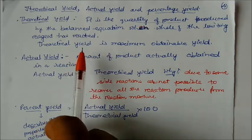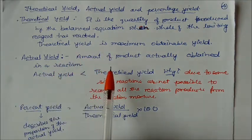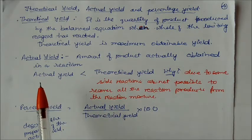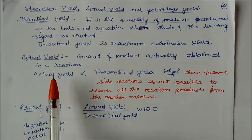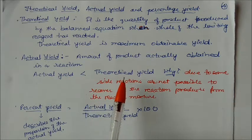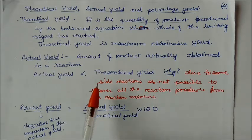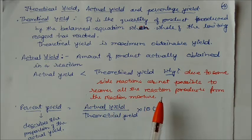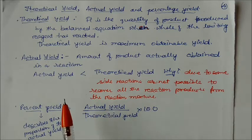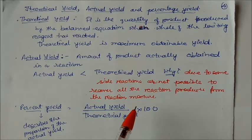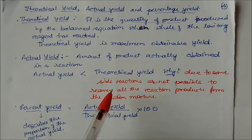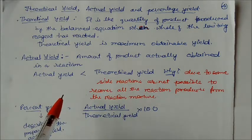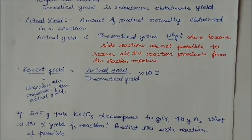Actual yield is always lesser than theoretical yield because some side reactions occur, it is not possible to recover all product from the reaction mixture, or some product cannot fully form. Due to these reasons we only get the actual yield, which is less than theoretical.